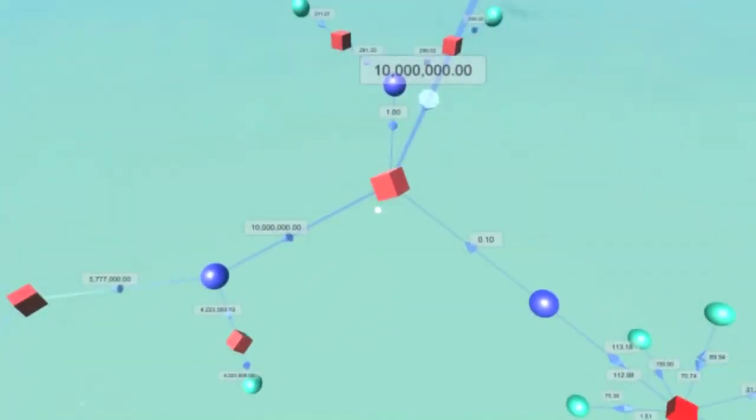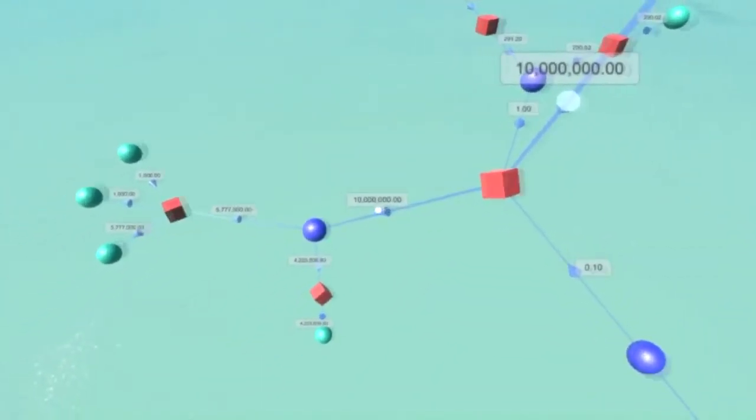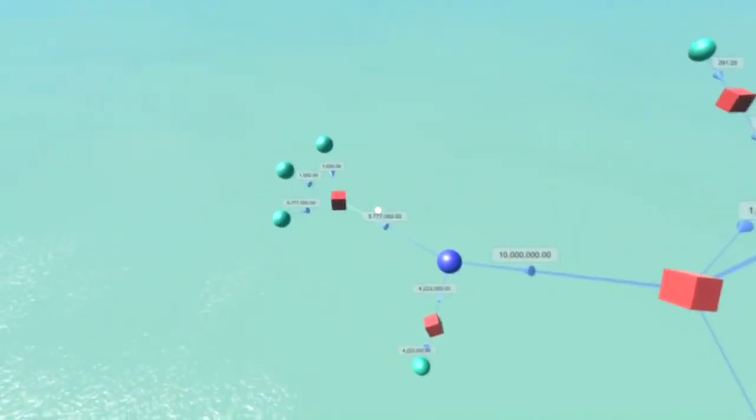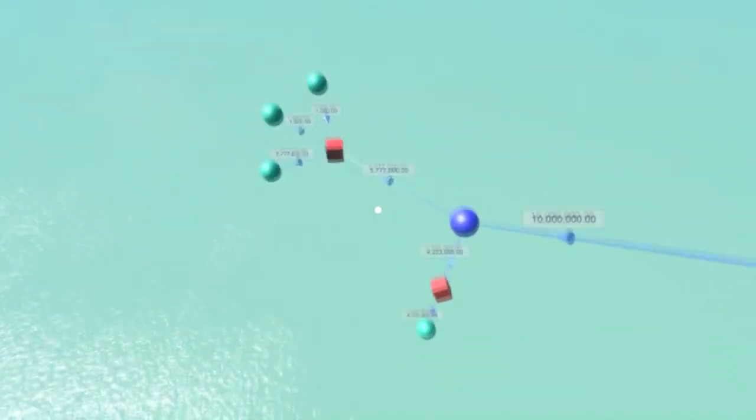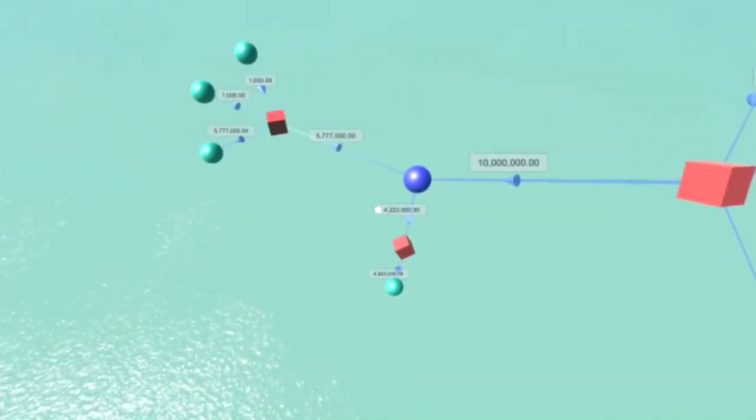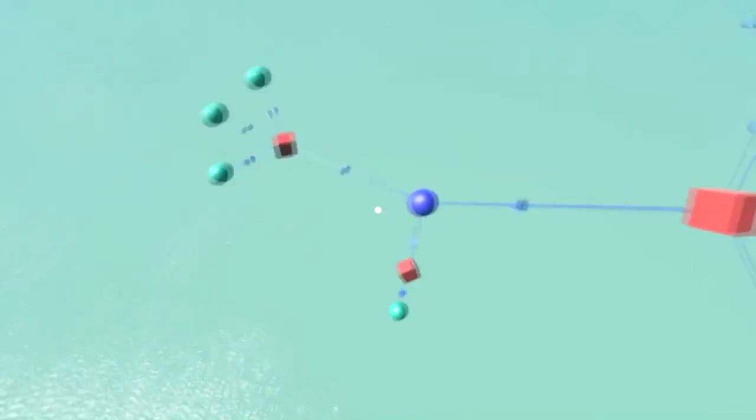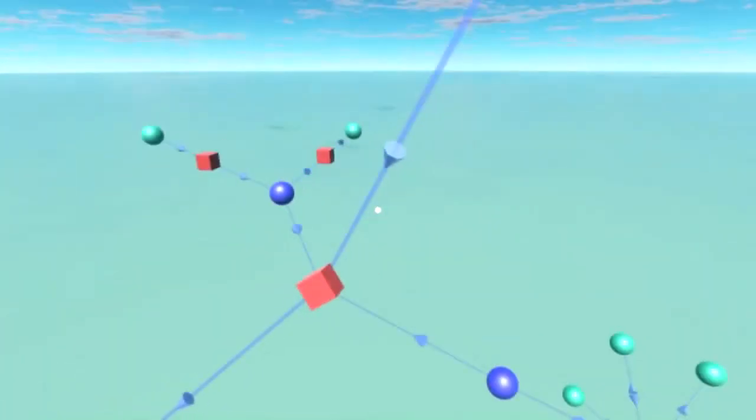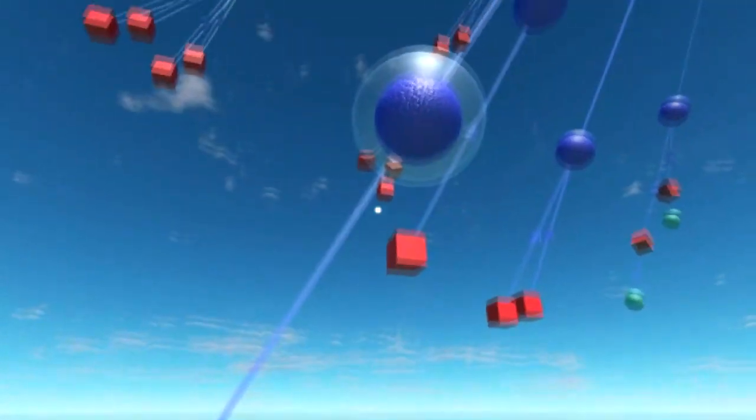Here we can see the 10 million milli-bitcoins that is the Bitcoin pizza transaction. And here we can see downstream of the Bitcoin pizza transaction, we can see the 10 million kind of splits into two.